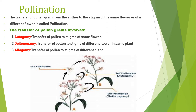The transfer of pollen involves three main steps: autogamy, geitonogamy, and allogamy. In autogamy, the pollen grains are transferred to the stigma of the same flower — that is autogamy.